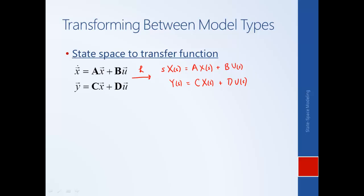Once we've taken the Laplace transform assuming zero initial conditions, we need to rearrange our equations into the form output over input — we want to find Y(s) divided by U(s). Looking at these equations, we explicitly have y and u, our input and output, but we have another variable x which is the internal state of the system — neither the input nor the output. So what we need to do is eliminate x(s) from between these two equations. Calling the first equation one and the second equation two, we'll solve equation one for x(s).